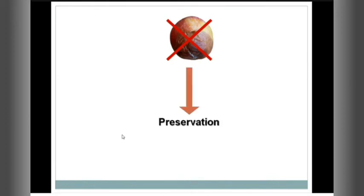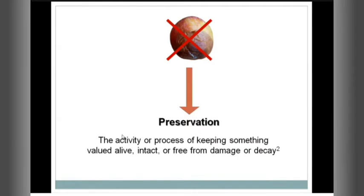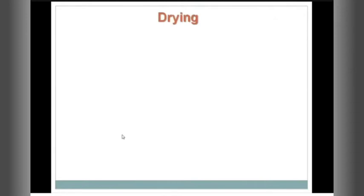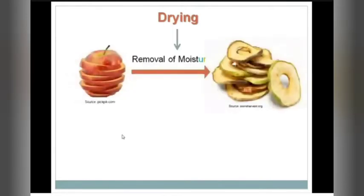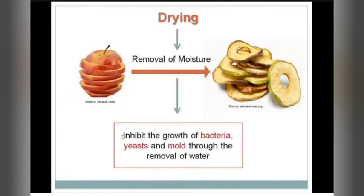The second thing we can do is a sort of magical thing — it's preservation. By definition, the activity or process of keeping something valued alive or free from damage or decay is preservation. Simply, we are converting perishable stuff into preserved stuff. Preserved stuff is something which has a longer shelf life. There are a lot of ways for preservation, and one of the world-famous techniques is drying.